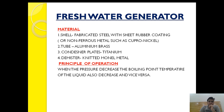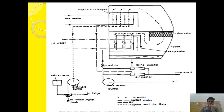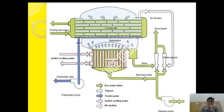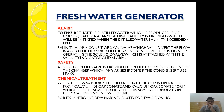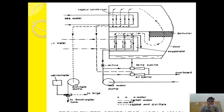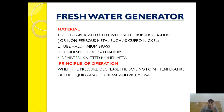In today's topic we will start with the material used in the fresh water generator. After that, through different diagrams such as the Alpha Laval diagram and Sasakura manufacturer diagram, I will explain how this type of fresh water generator works, what are the different alarms and safeties provided, and also what chemical treatment we need to do.